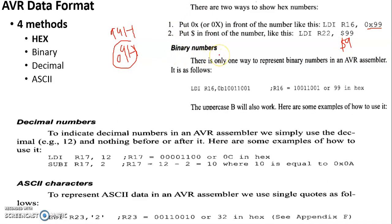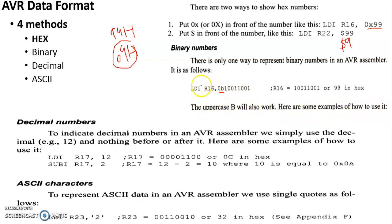Next is the binary number format. To represent binary numbers in AVR, you use the prefix 0b in front of the number. The uppercase B will also work. This is the only way in which you can represent binary data format in AVR.